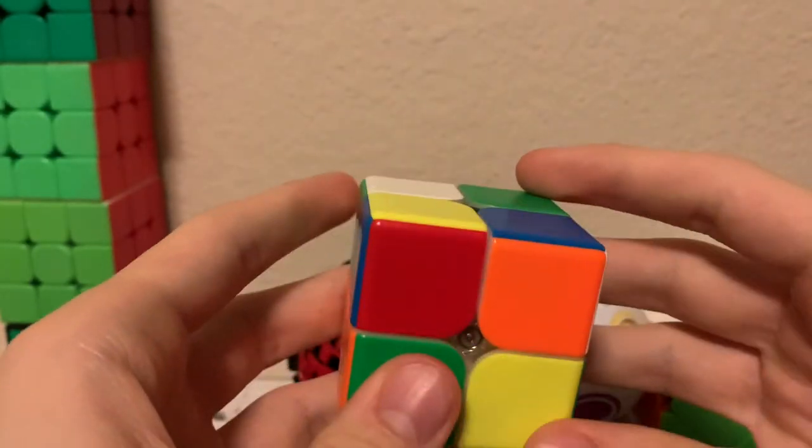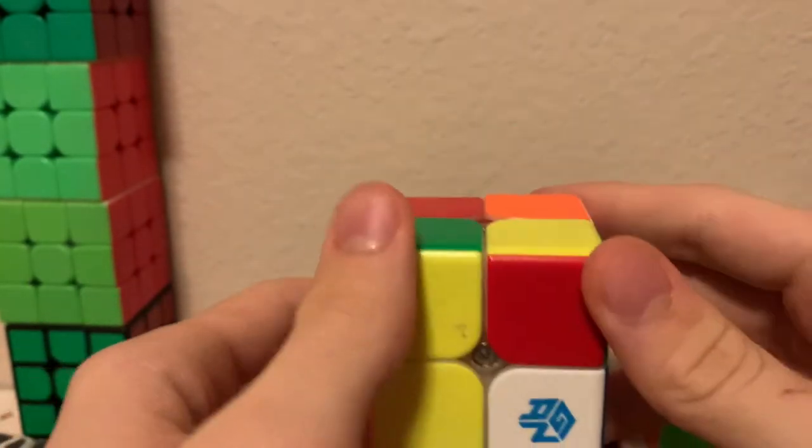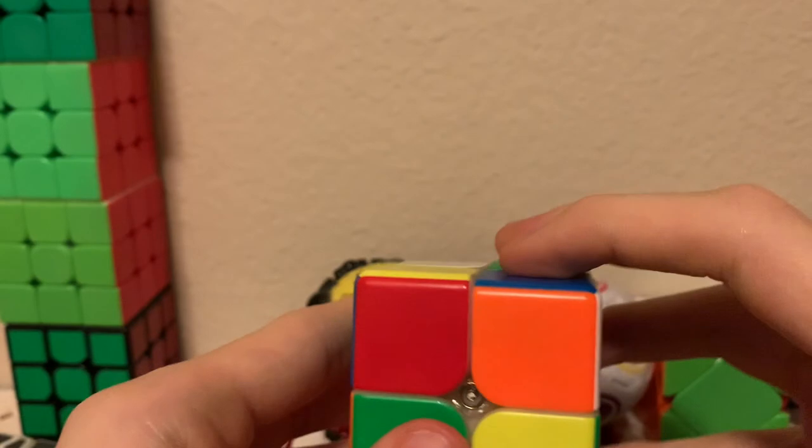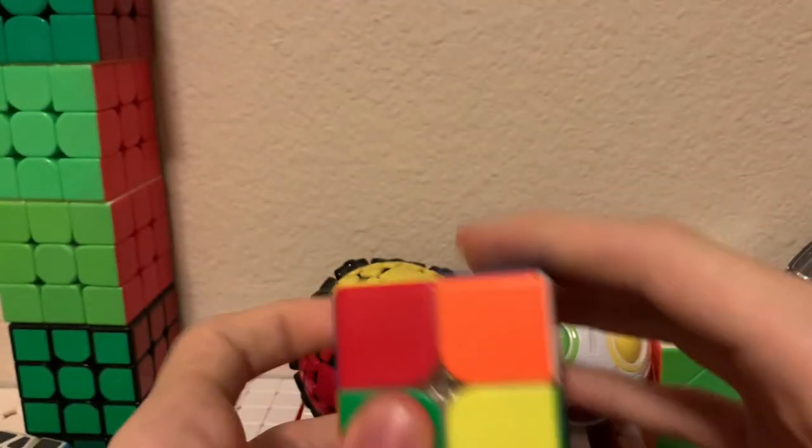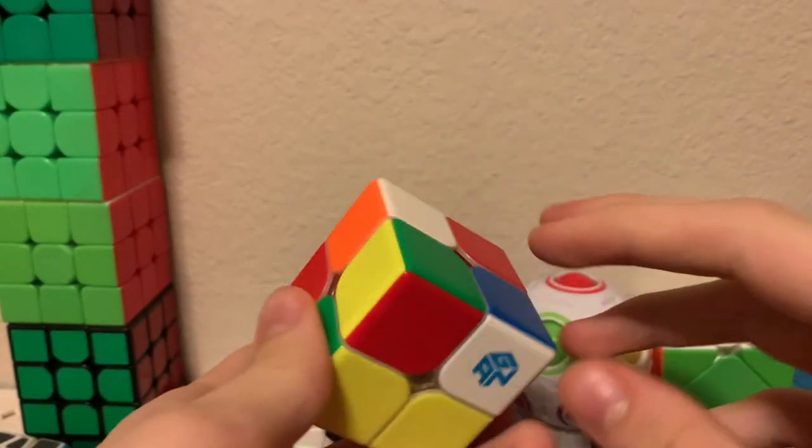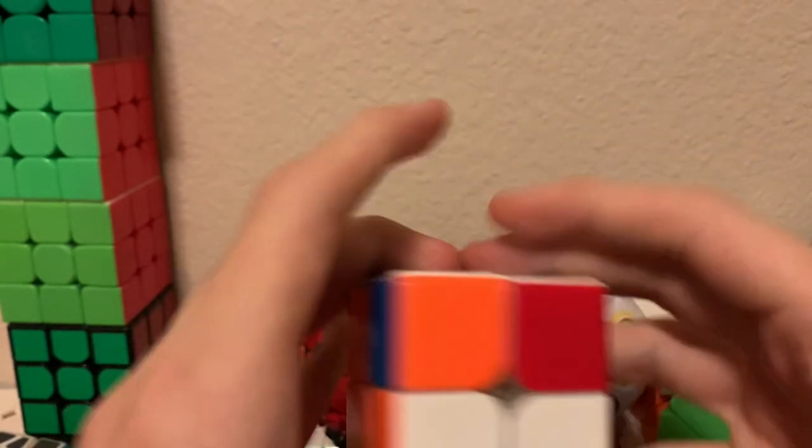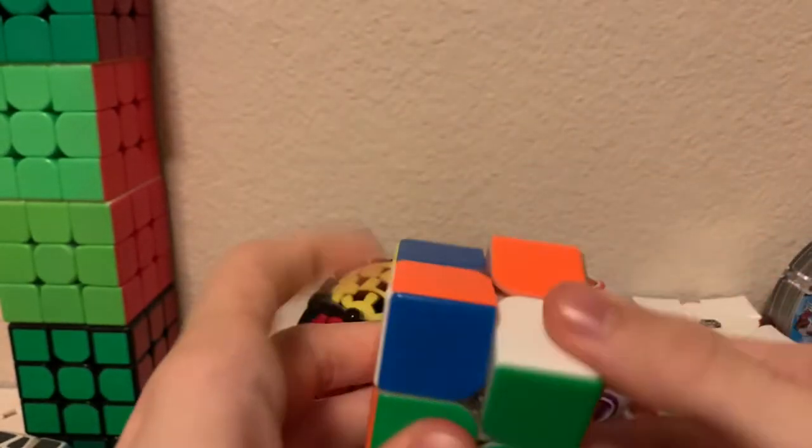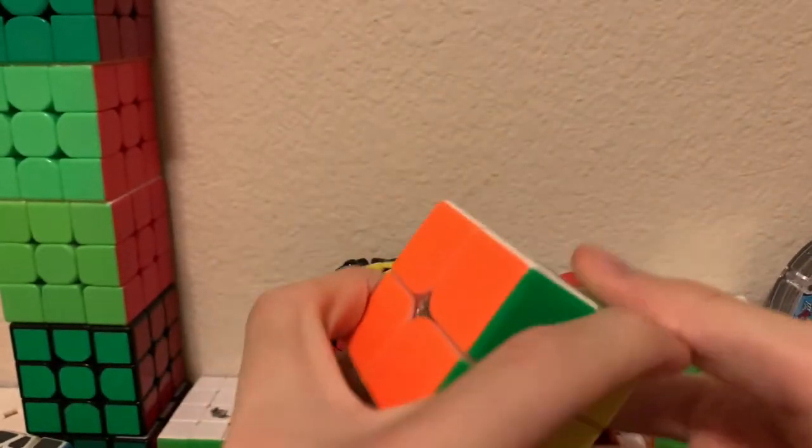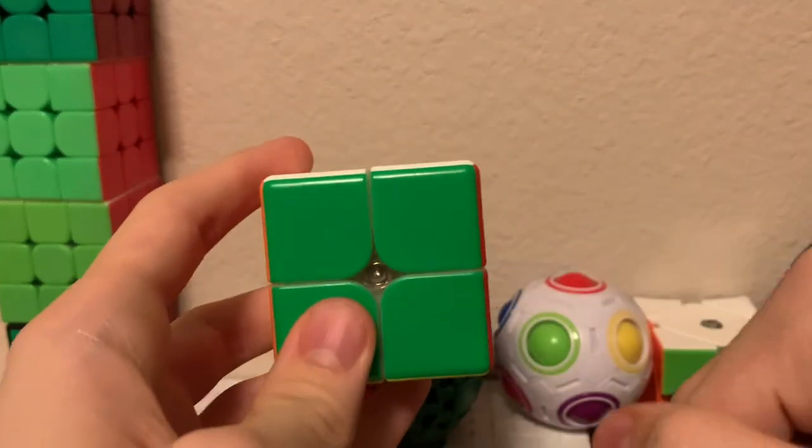So now that you have a 2gen cube, you want to make sure to preserve the 2gen state by only using R and U moves. So what you first want to do is to solve the bottom two corners, and you can do that like that. And now you can solve the top four corners using one of seven outcomes I'll have down below in the description.